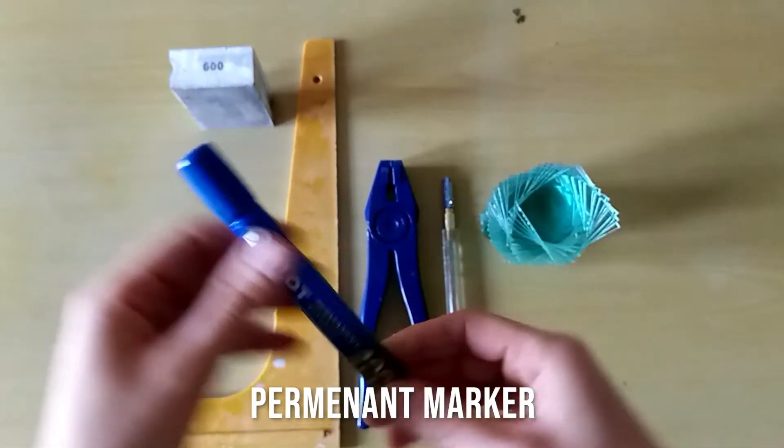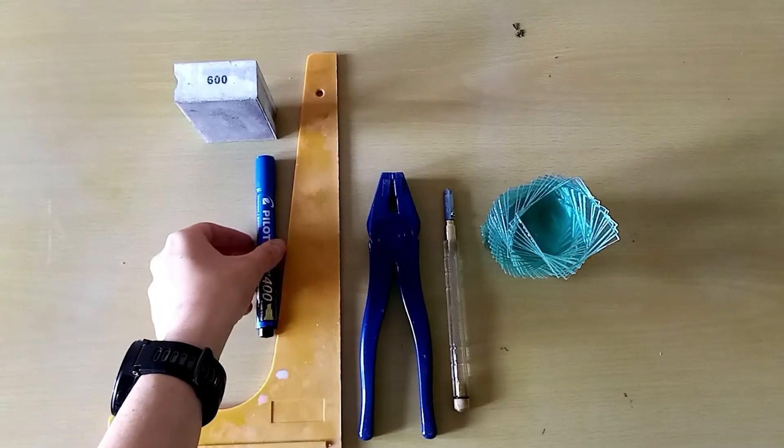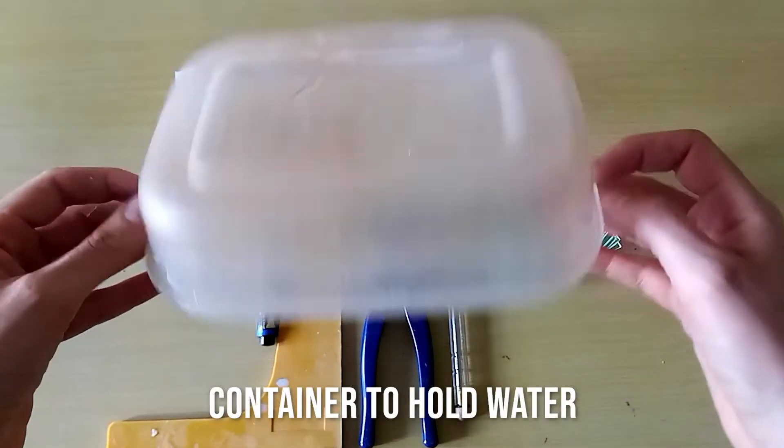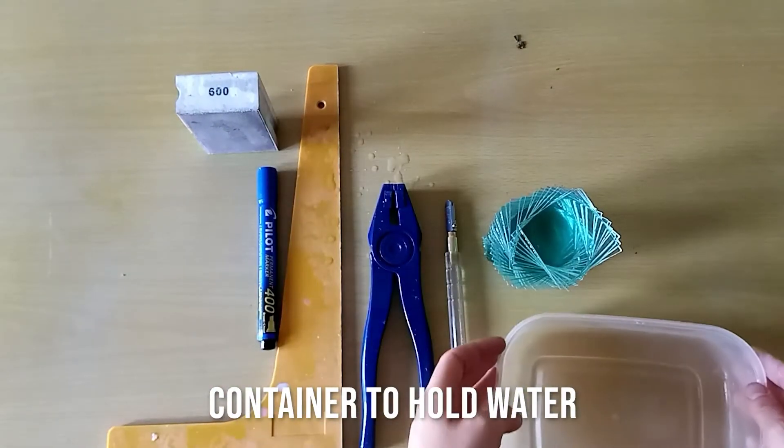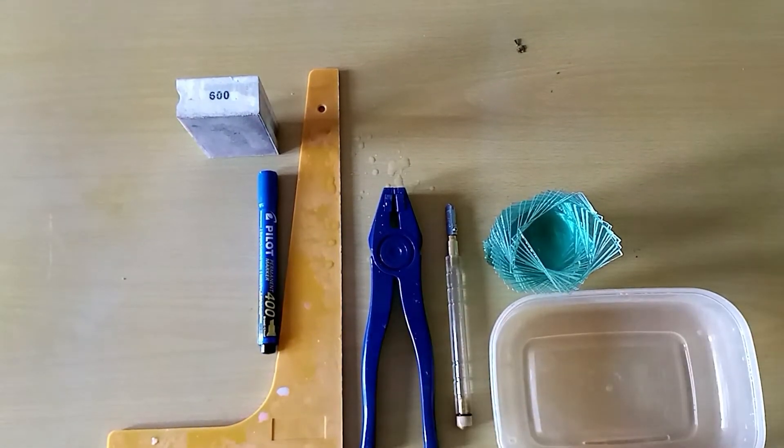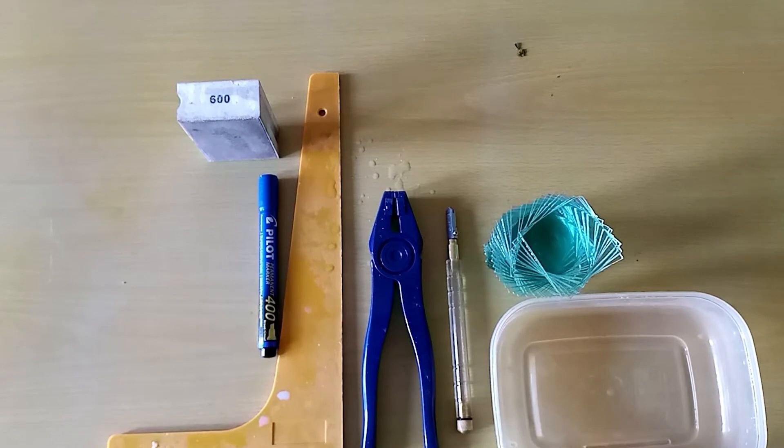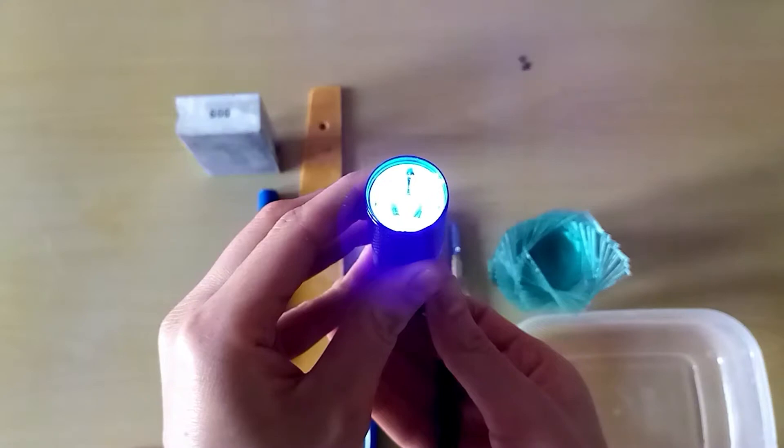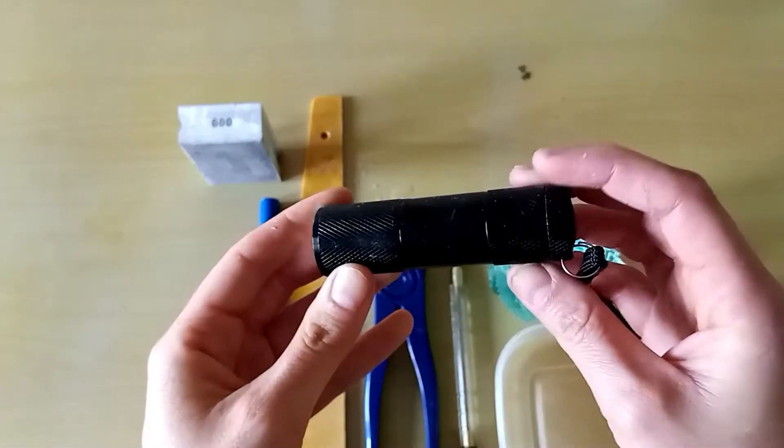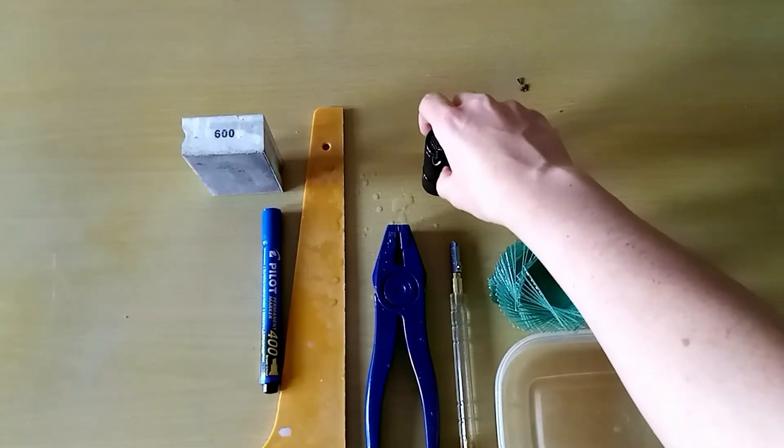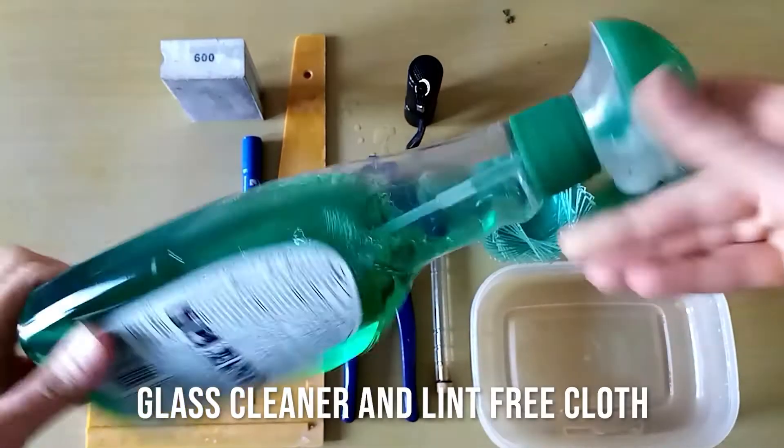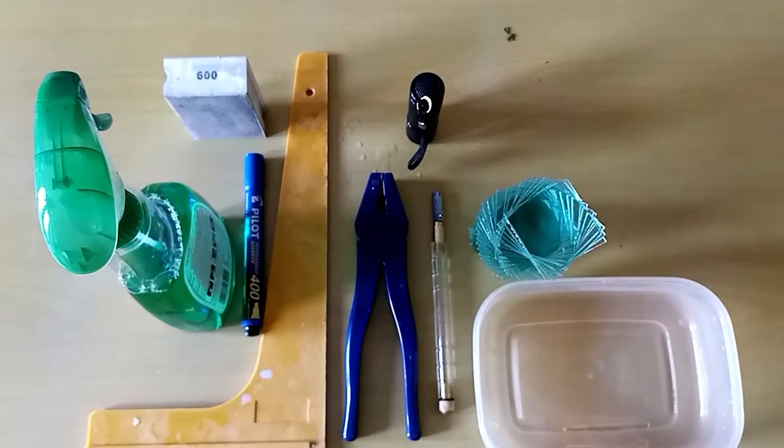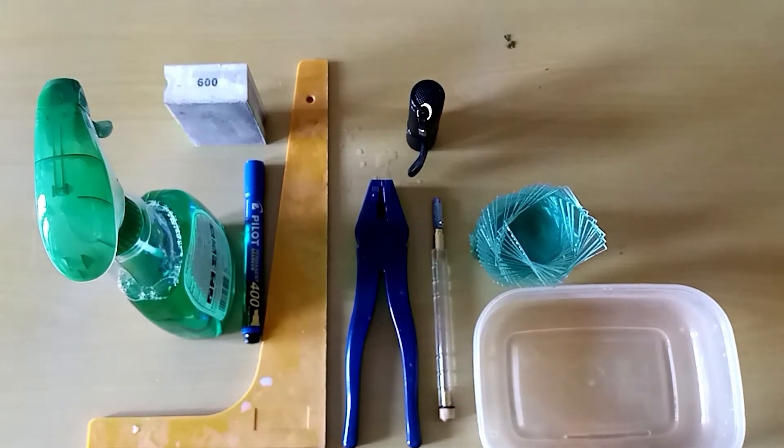You'll need a permanent marker to mark out where to cut your glass, and you'll need a container to hold some water in while we're grinding the glass. For this we're using some UV light to cure our glue, so you'll need a UV torch. This one I got on Amazon for a few quid and it's strong enough to cure this UV glue. You need some glass cleaner and a lint-free cloth. This is really important because we don't want any cloth fibers being left behind on our glass after we clean it.